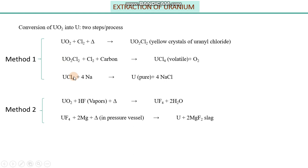Uranium was purified from its respective oxides by two methods. In the first method, uranium oxide was treated with a limited amount of chlorine at high temperature to give dichloride of uranyl oxide, then with excess chlorine in the presence of carbon it was completely converted into uranium chloride, which is a volatile material, followed by treatment with a reducing agent to obtain pure uranium.